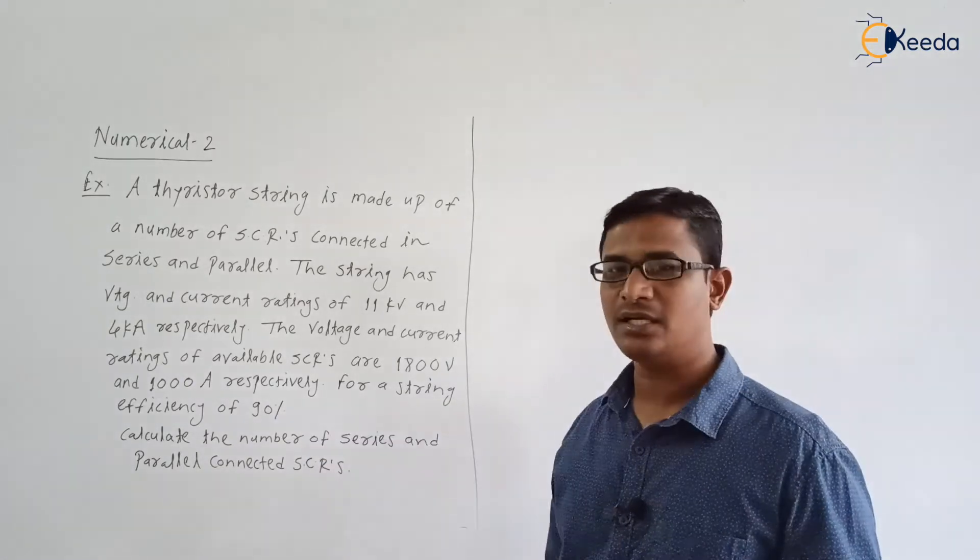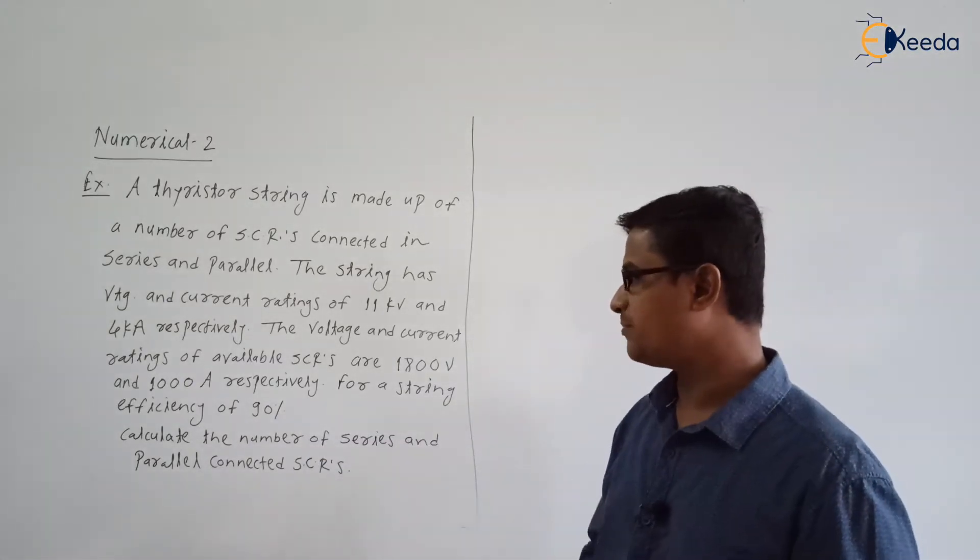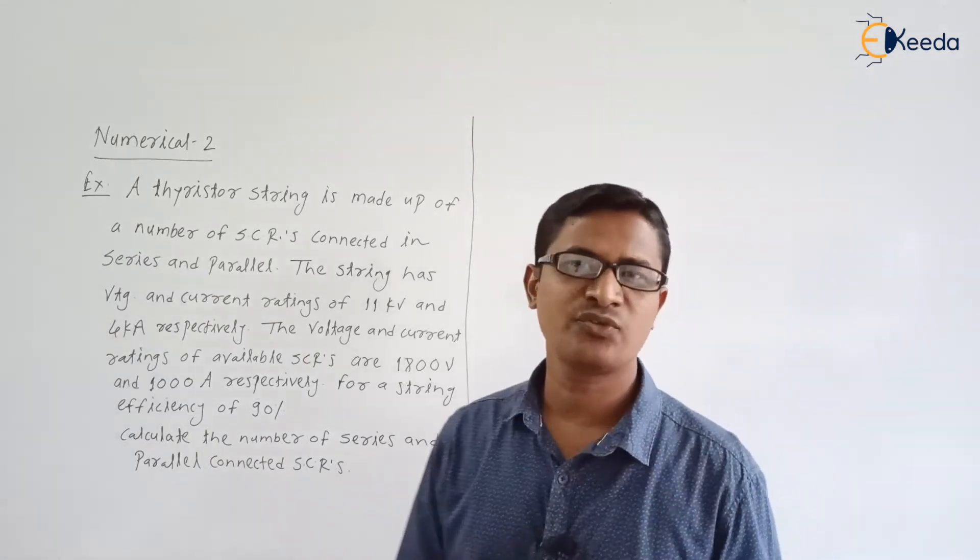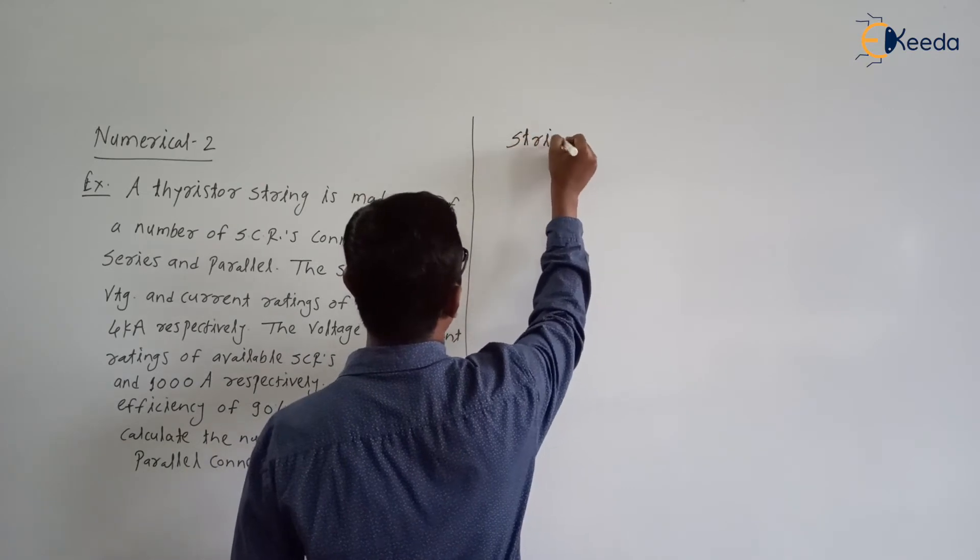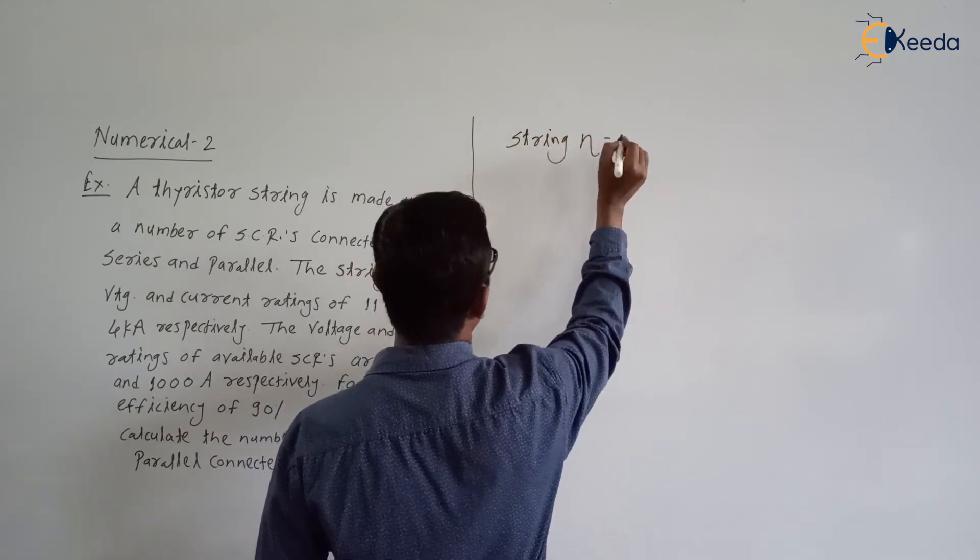For a string efficiency of 90%, calculate the number of series and parallel connected SCRs. So very simple example. String efficiency is given. String efficiency is equal to what?